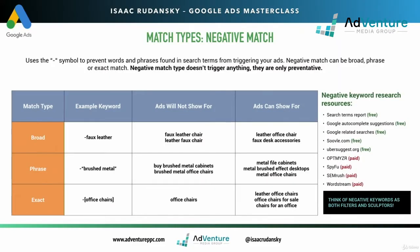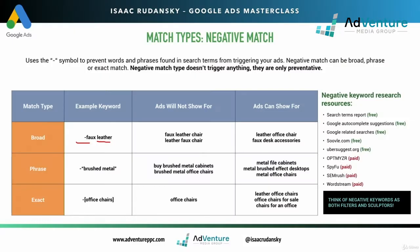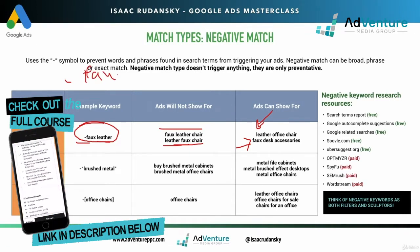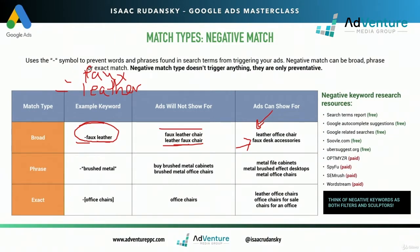So ads will not show for 'faux leather chairs' or 'leather faux chairs' because faux and leather are in both of those search terms. But ads can show for 'leather office chair' or 'faux desk accessories.' You have to be careful: with a two-word negative like faux leather, Google only blocks when both words appear together. So if I also wanted to exclude 'leather office chair' and 'faux desk accessories' separately, I would need negative faux and negative leather as two separate keywords.